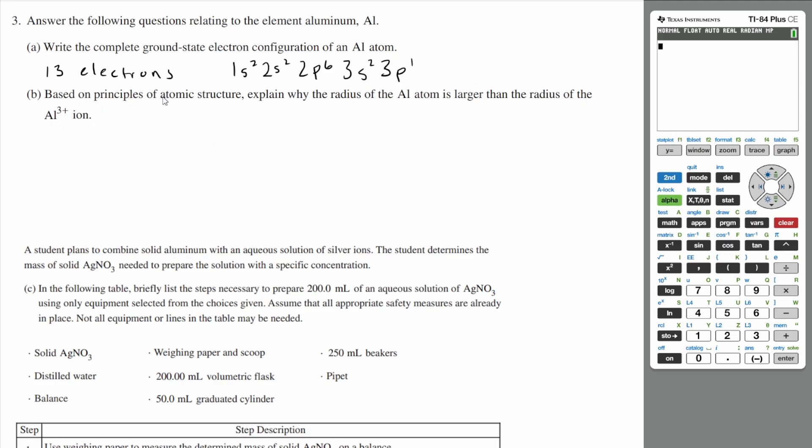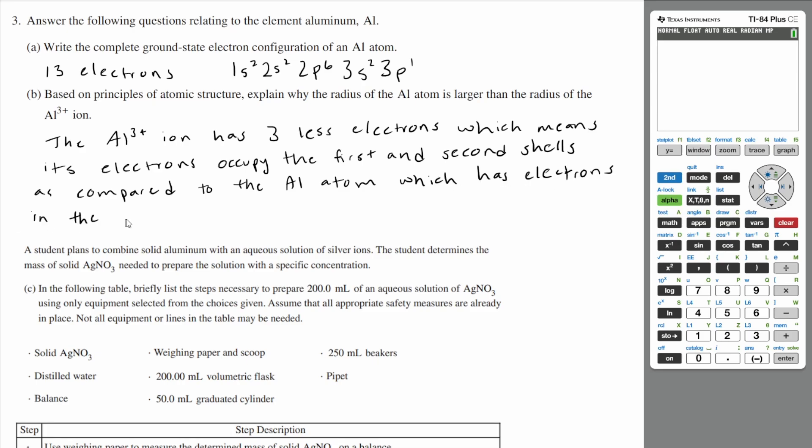Let's go to B. Based on principles of atomic structure, explain why the radius of the aluminum atom is larger than the radius of the aluminum 3+ ion. The aluminum and the aluminum 3+ ion are going to have the same number of protons. The only difference is that the aluminum 3+ ion is going to have three less electrons than the normal aluminum atom. What that means is that these last three electrons are not going to be there. And these last three electrons are actually in a different shell. It's on the third shell. So if you get rid of the third shell, you're just going to be left with the first and the second shell, which is going to mean that the radius is smaller.